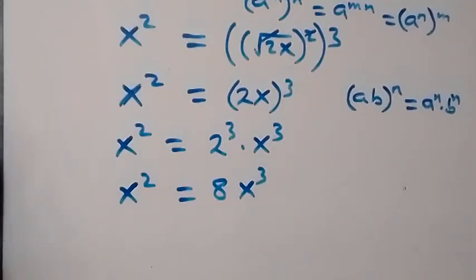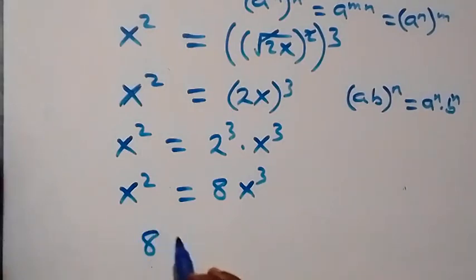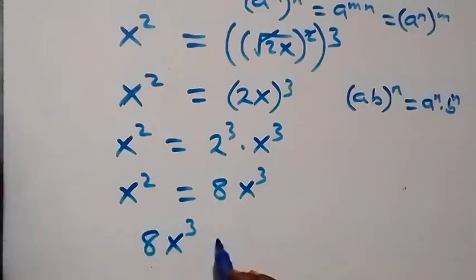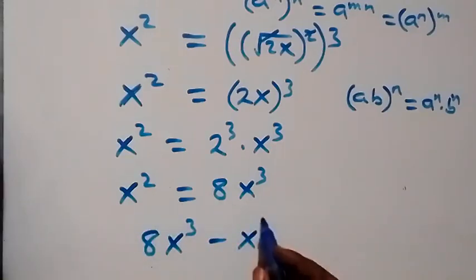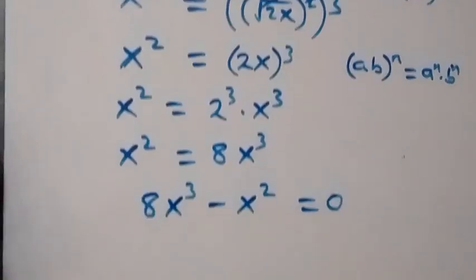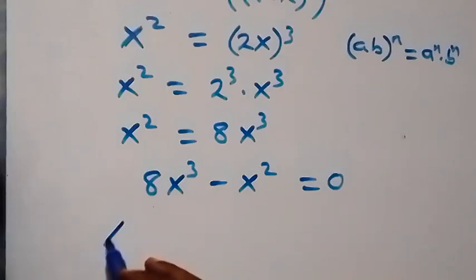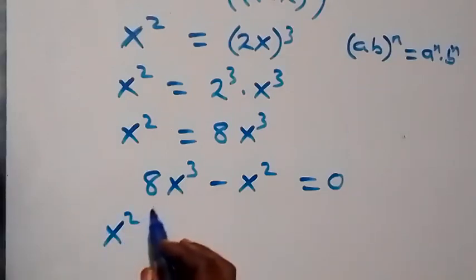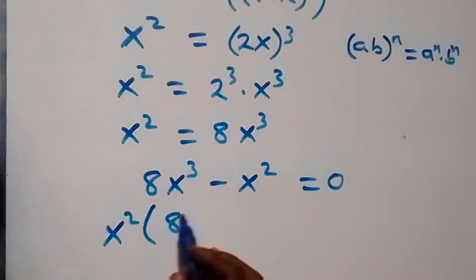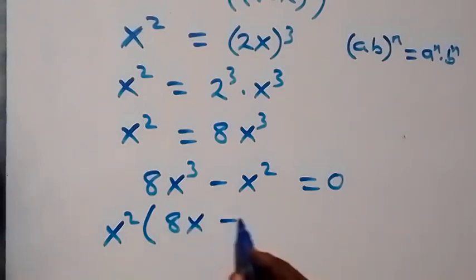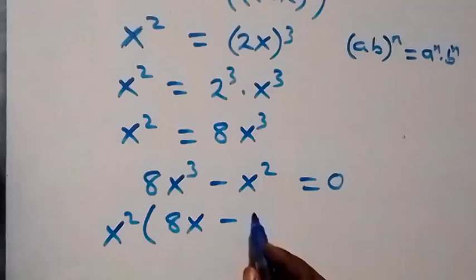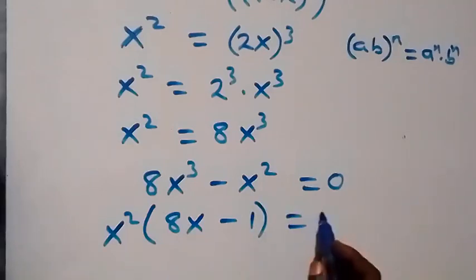Let's bring everything to one side. We have 8x cubed, and taking x squared to the left we get 8x cubed minus x squared equals 0. What is common here is x squared, so we factor x squared out, leaving 8x minus 1, which equals 0.